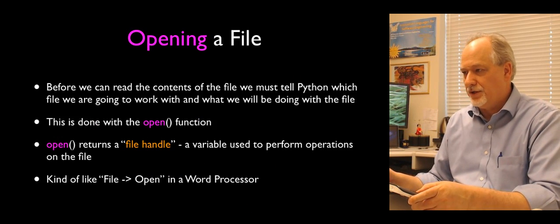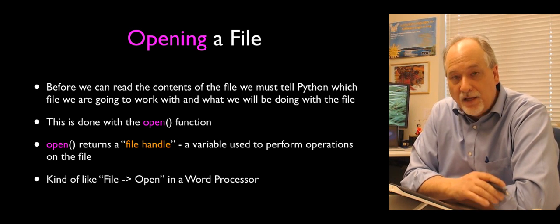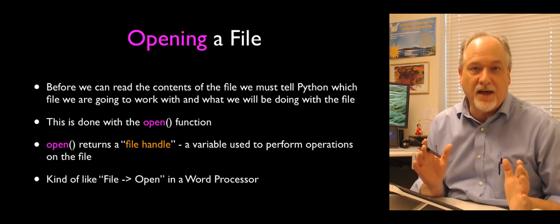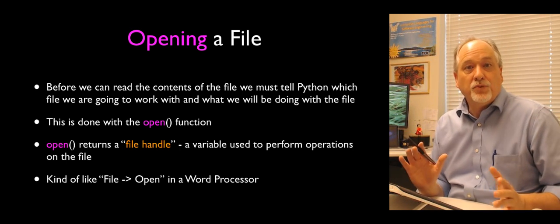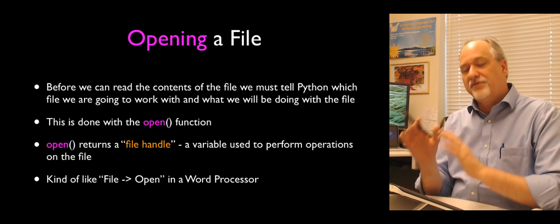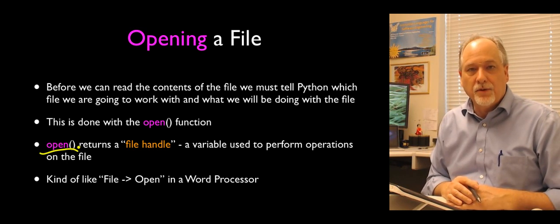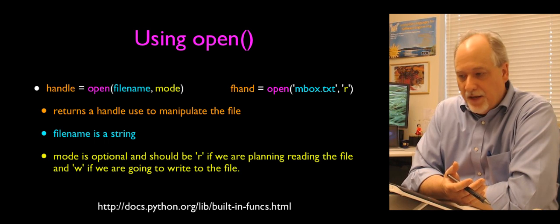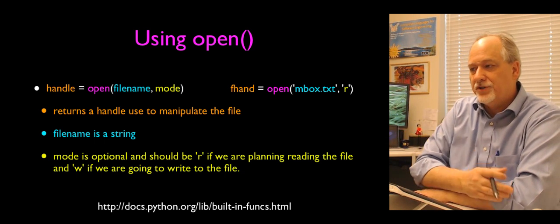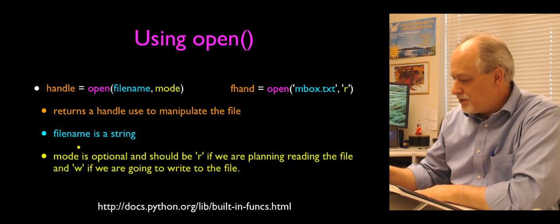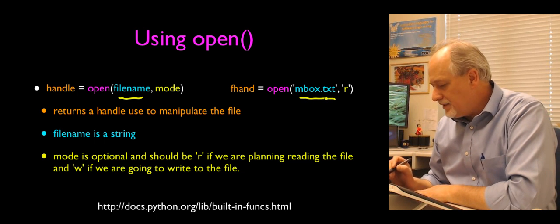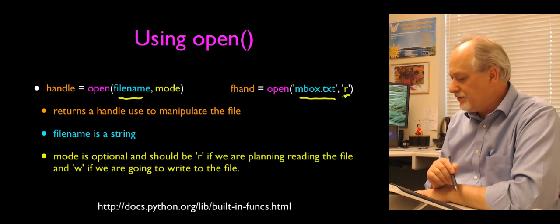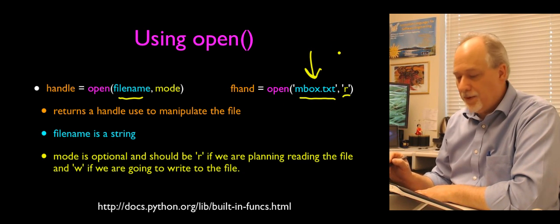To access file information, we have to do something called opening the file. There are hundreds of thousands of files on your hard drive, so you call the built-in function `open` and specify which file you want to work with. The `open` function takes two parameters: the first is the name of the file, like mbox.txt, and the second is how you're going to use it — read, write, etc. Most of the time we'll be reading files. You can leave the second parameter off and it assumes read mode.